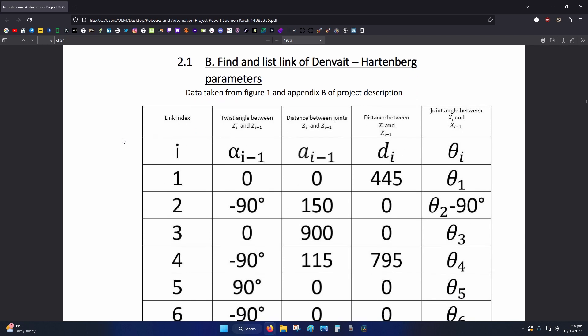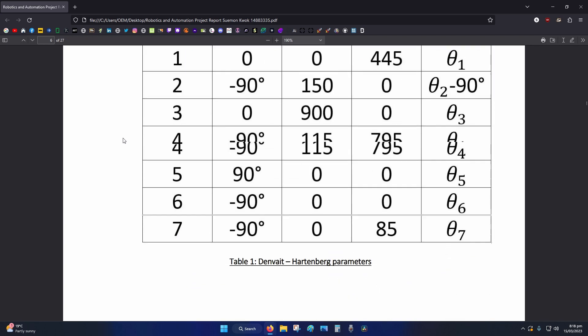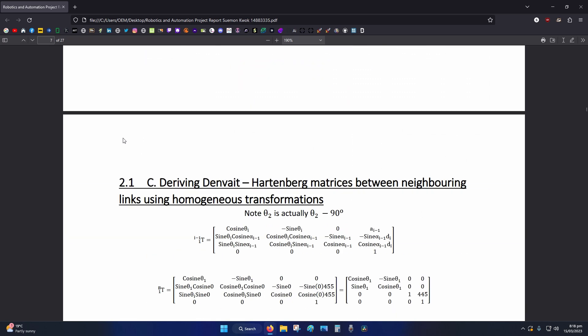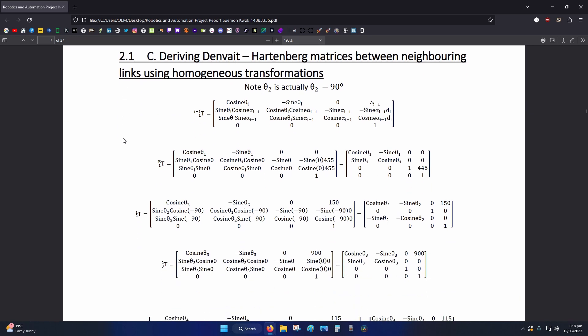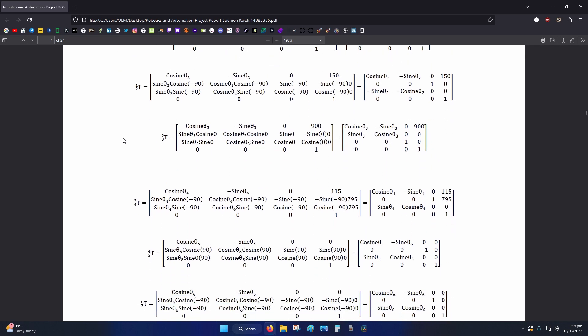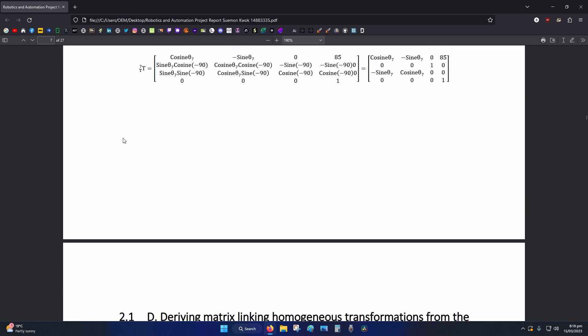So this is question two. Find a list of links and the Hartenberg parameters. Deriving Hartenberg matrixes. This just looks like calculus to me and trigonometry. Good luck.